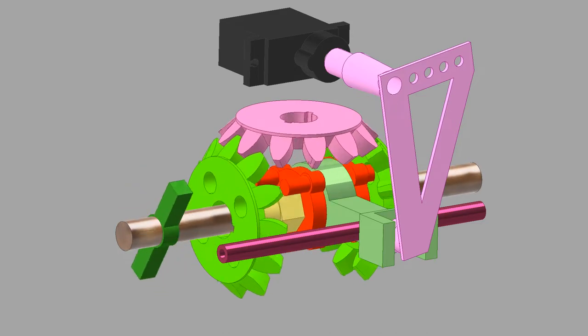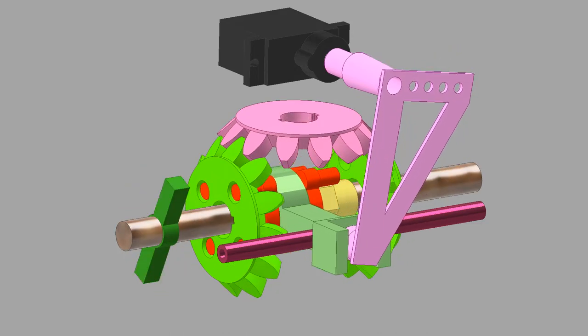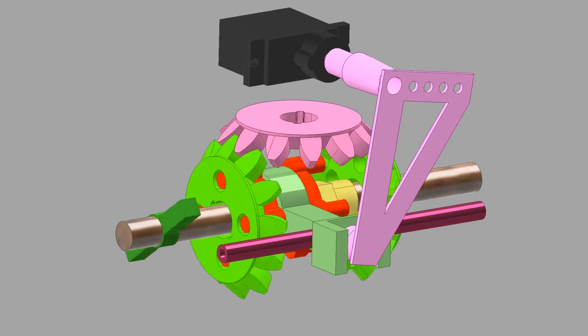The free spinning output shaft has a slider, the red component, which can be connected to either of the green output gears to match rotational direction.